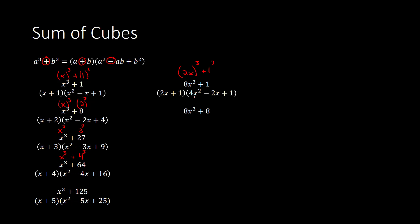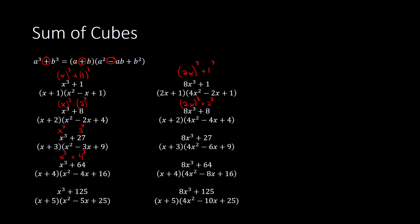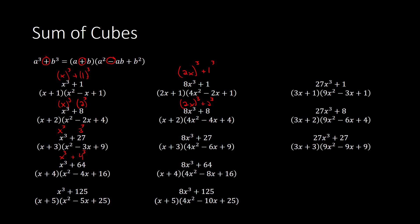Another example: 8x cubed plus 8. This is 2x to the third power, and this is 2 cubed. So instead of a and b, I have 2x and 2. So I have 2x plus 2, and then 2x squared gives me 4x squared. 2 squared gives me 4. There are a bunch of other examples you can look at, and all of these follow the same pattern. You can pause and try to determine how we got each of these.